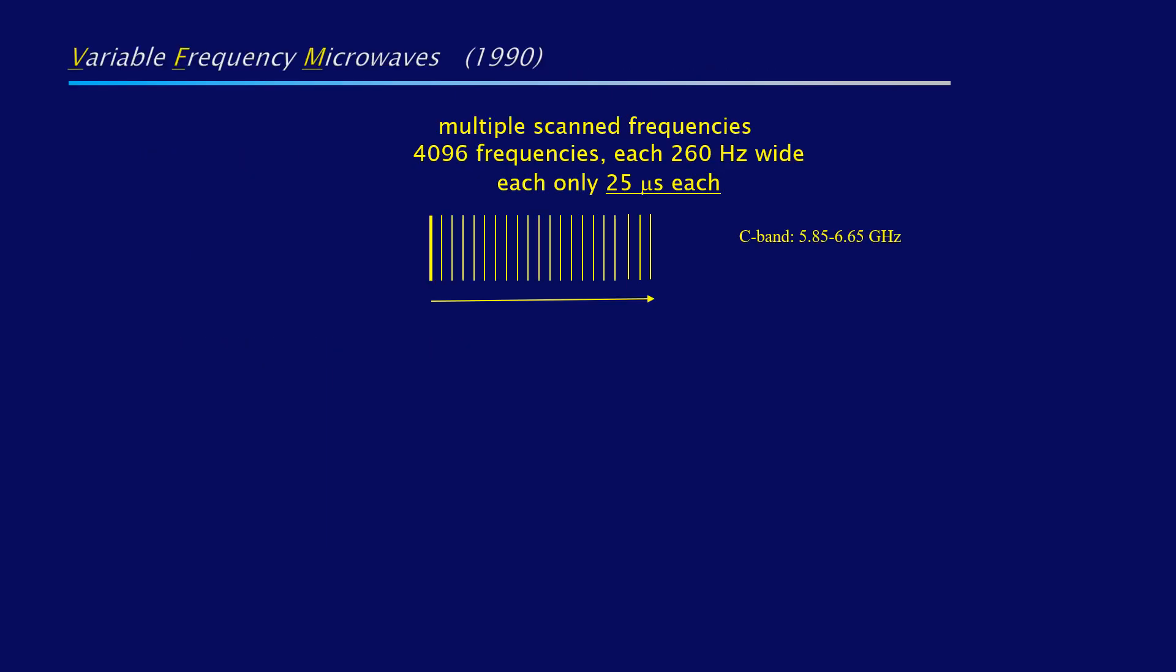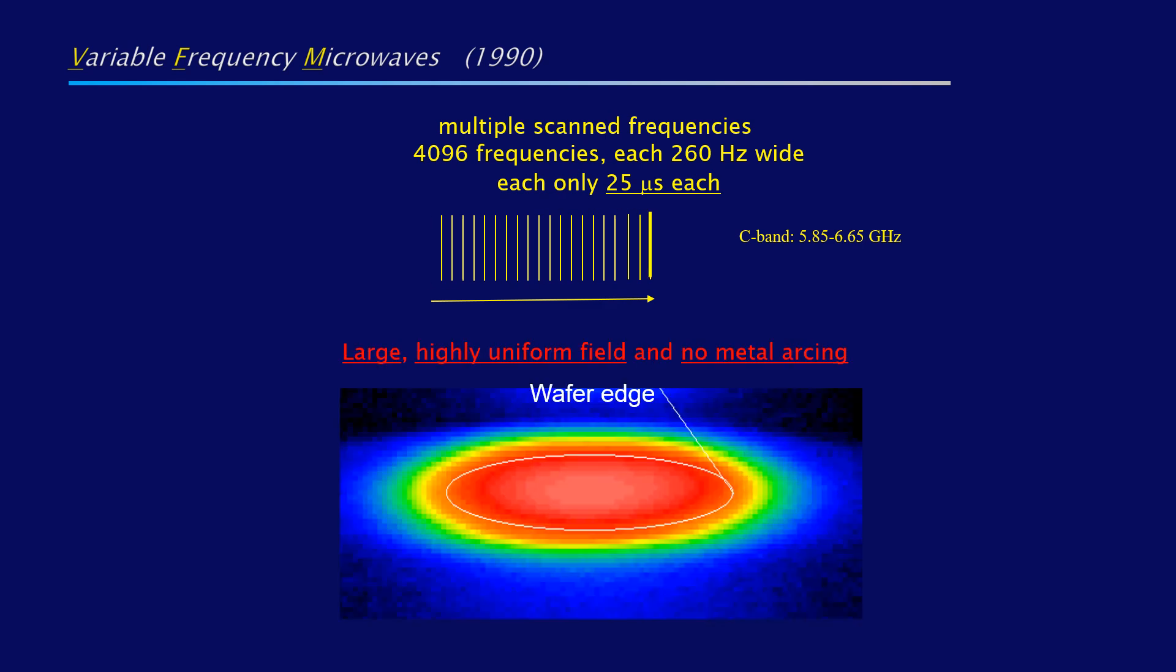It wasn't until 1990 that a really practical microwave field was generated. Instead of just one frequency, 4,096 frequencies were sequentially swept over one-tenth of a second. Each pulse only lasts 25 microseconds before the frequency is changed for the next pulse. This is too little time for an arc to be generated on a metal surface. Not only that, but the uniformity of the microwave field is nearly molecular.